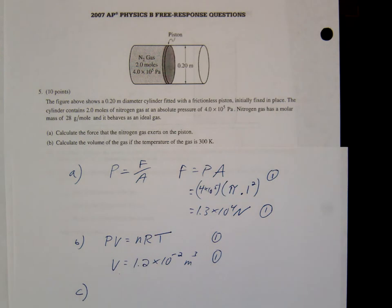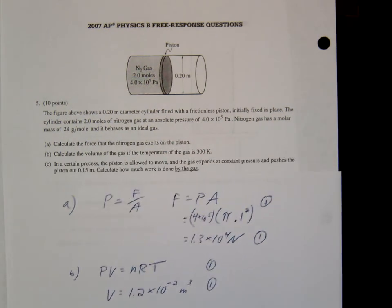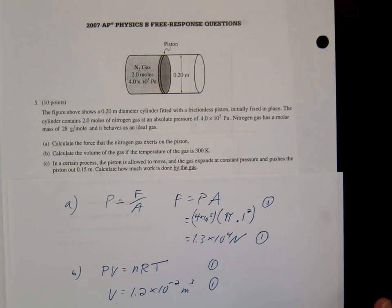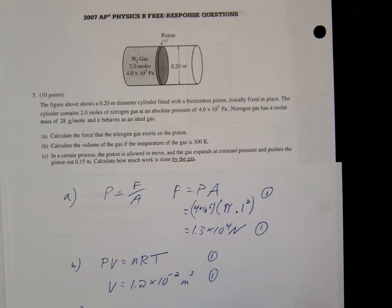Letter C. Unless, of course, you're going for a five. Number C. In a certain process, the piston is allowed to move. The gas is a constant pressure. Pushes the piston out 0.15. Calculate how much work is done by the gas.